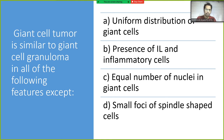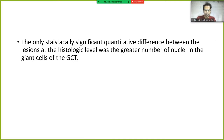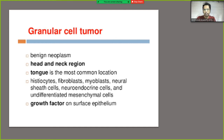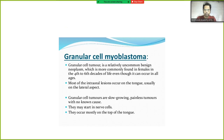Giant cell tumor is similar to giant cell granuloma in most histological features, except the giant cell tumor has a greater number of nuclei in the giant cells. Giant cell tumor is a benign neoplasm; the tongue is the most common location in the head and neck region. Granular cell myoblastoma and granular cell tumor refer to the same thing — a painless tumor.